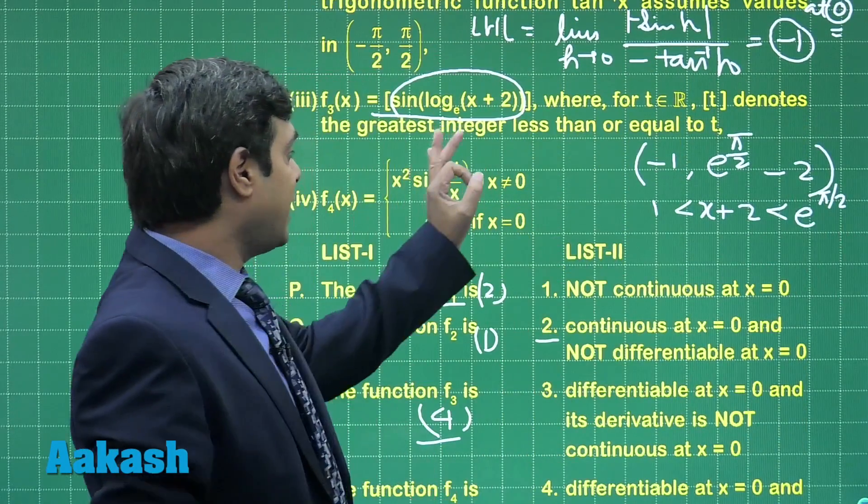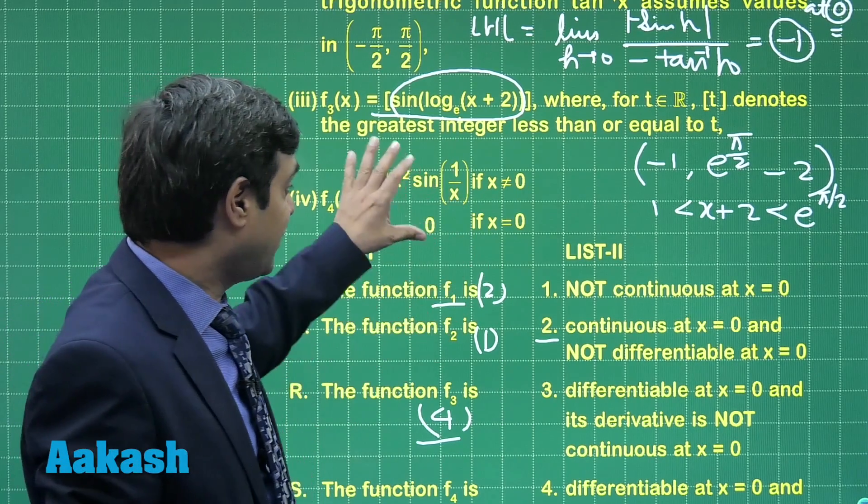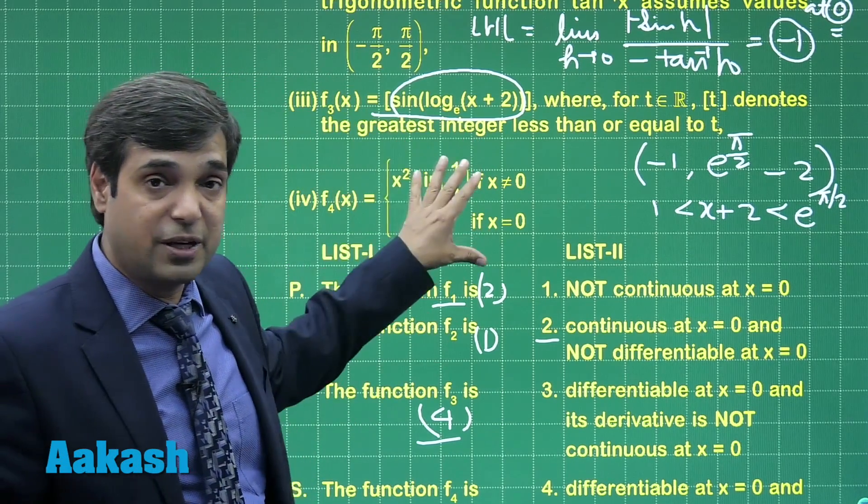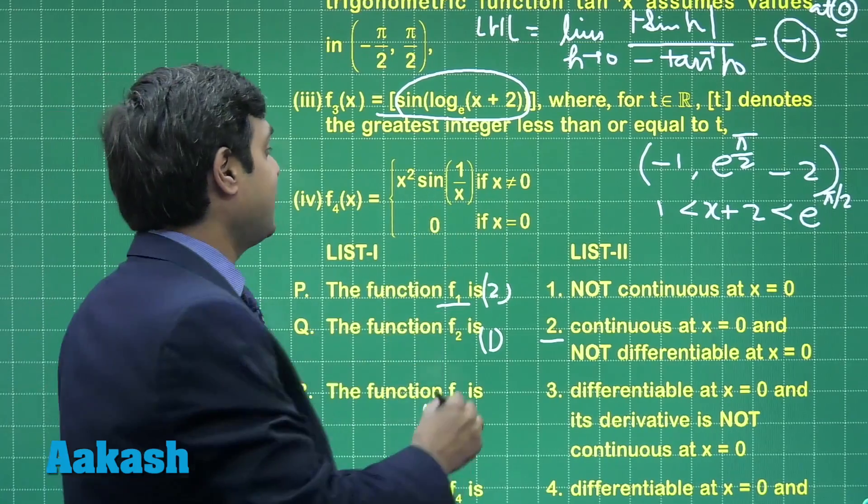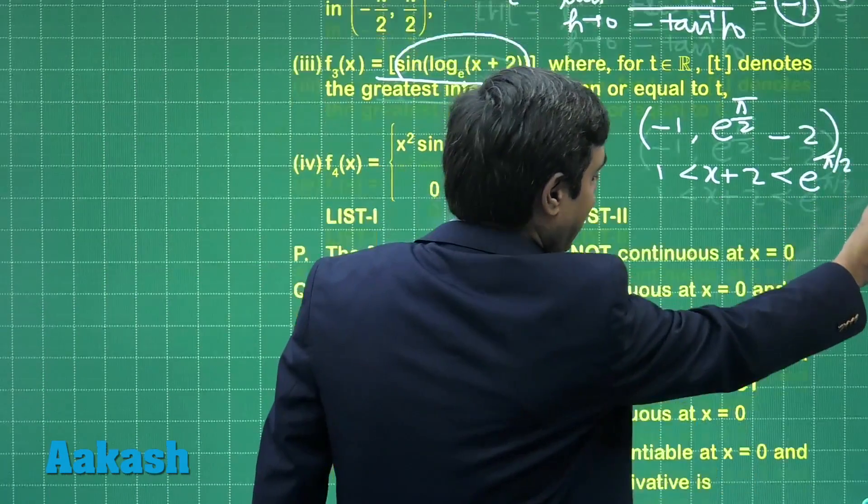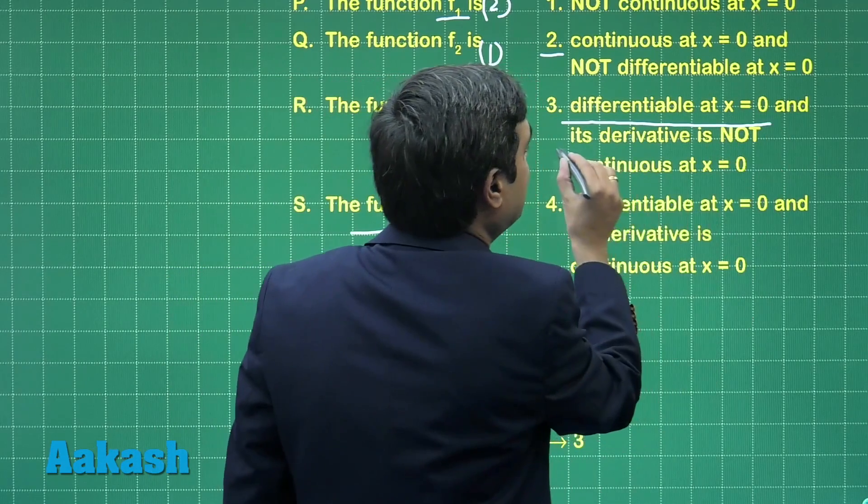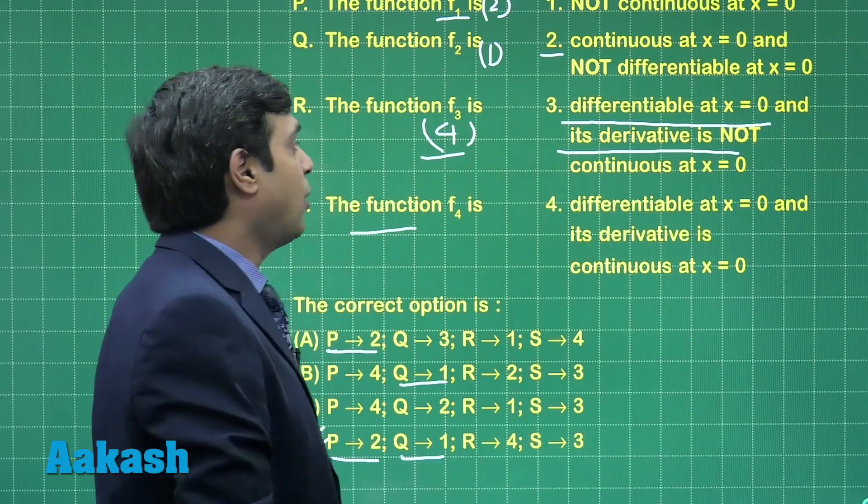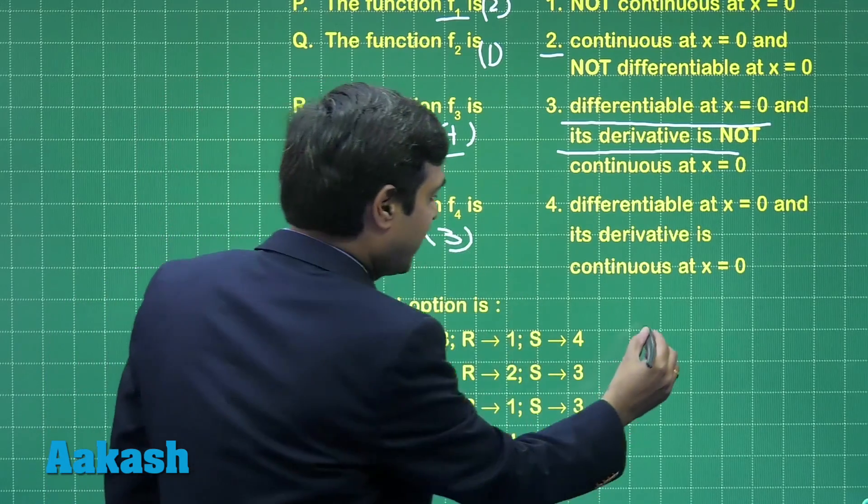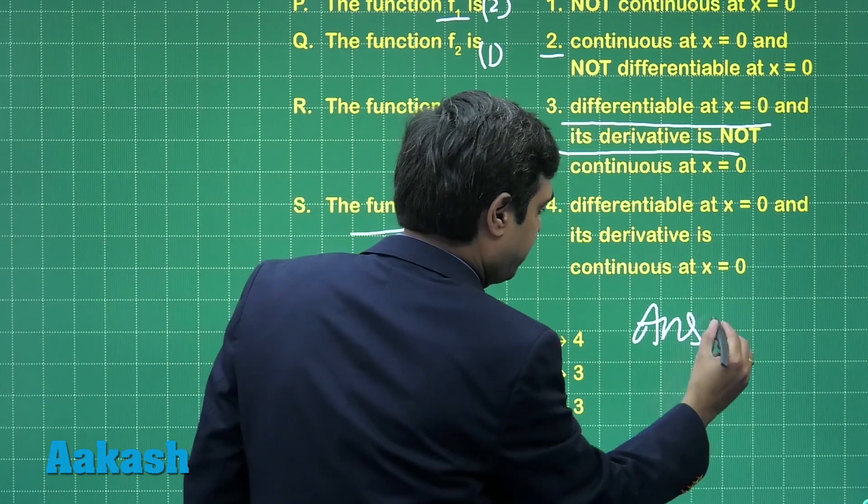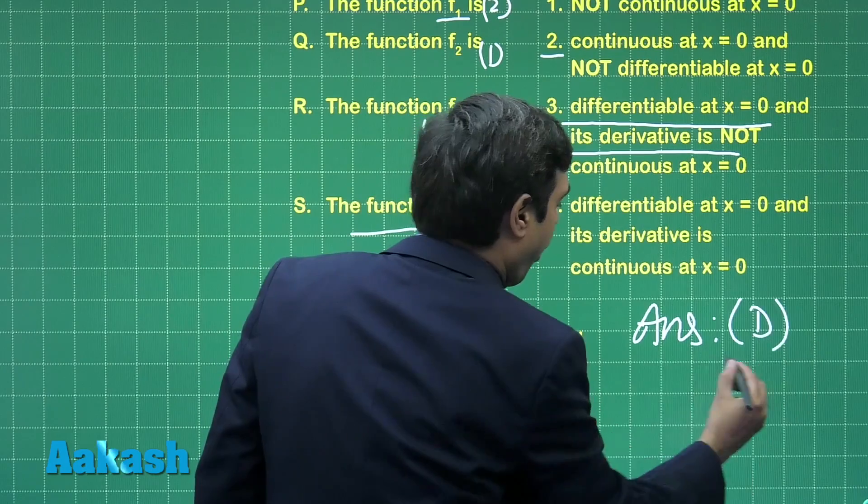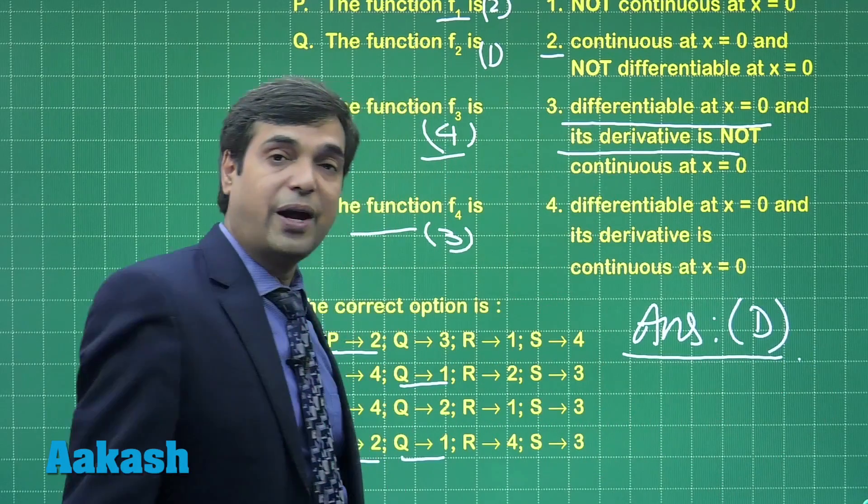x² sin(1/x) is a standard function. We know that this function is continuous as well as differentiable, but the derivative is not continuous at x equals 0. Clearly differentiable at x equals 0, but the derivative is not continuous, meaning third. The correct answer for this question is option D.